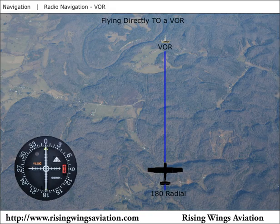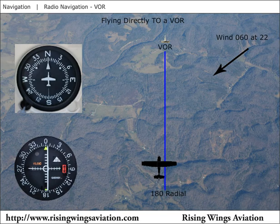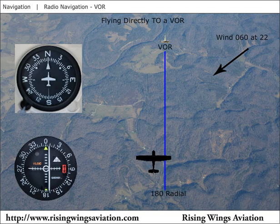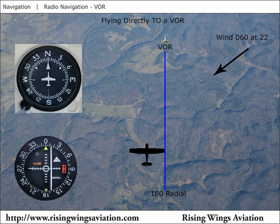While maintaining a 360 degree heading, observe the movement of the CDI. Let's say the CDI begins to move to the right. In this case, the instrument is telling us that we are drifting to the left with the wind whenever we maintain a 360 heading. At this point, we must choose a new heading to counteract the airplane drifting to the left. We'll turn right and establish the airplane on a 015 heading.